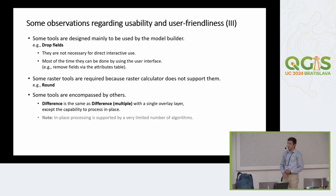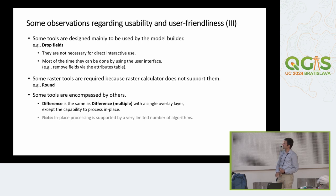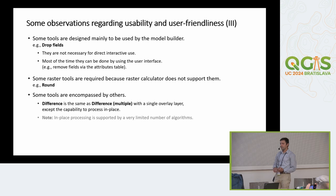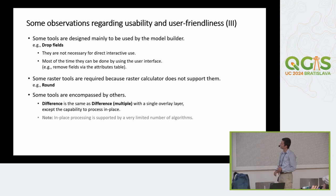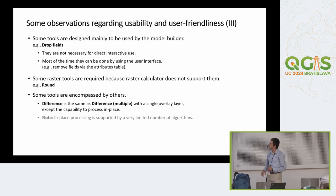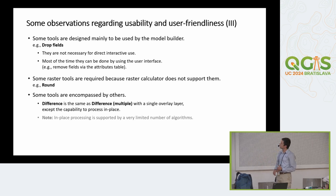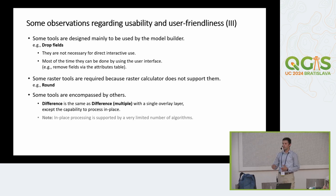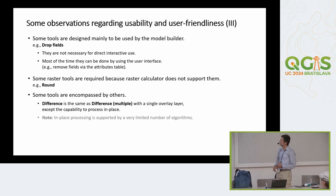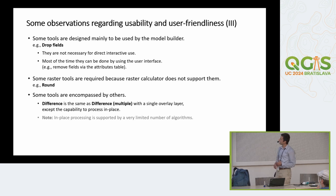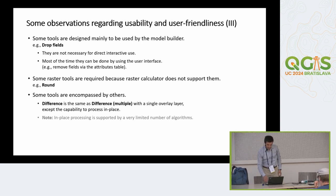Some tools are designed mainly to be used by model builder — for example, 'drop fields', which you normally wouldn't use by itself because the same functionality can be done easily using the attributes table. There are also some tools only required because the raster calculator lacks certain capabilities — like rounding decimal numbers — which could be added to the raster calculator easily. And there are tools that do exactly the same thing, with the only difference being the number of layers considered: the 'difference' tool works only with two layers, while 'difference multiple' considers multiple layers — so 'difference' is just a subset of the other.